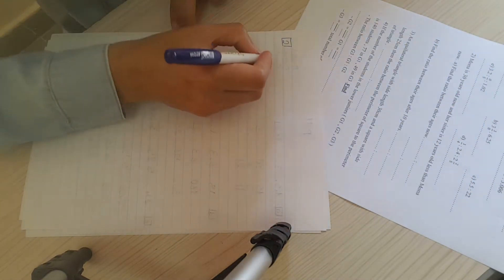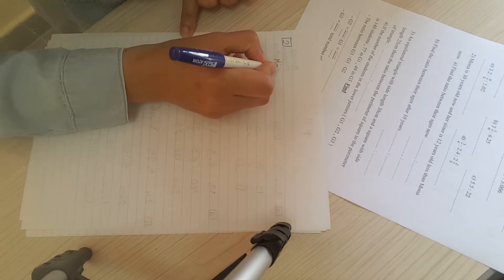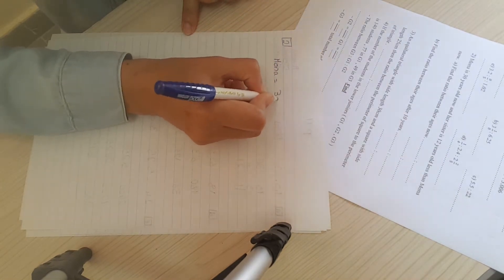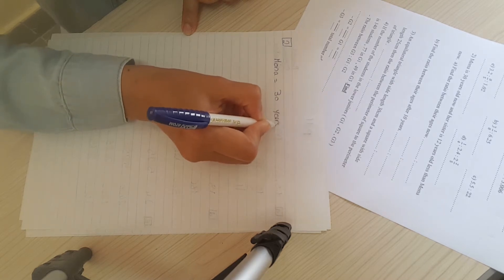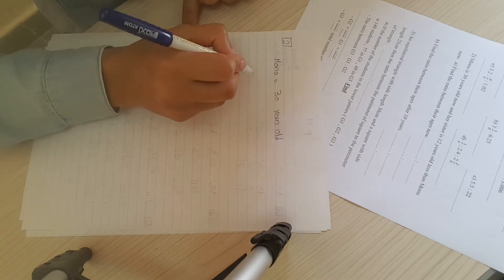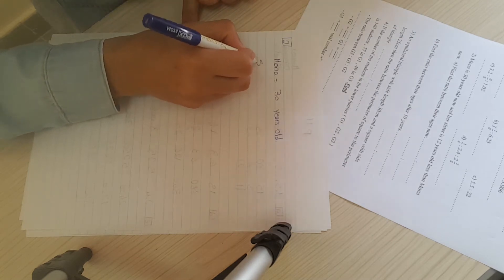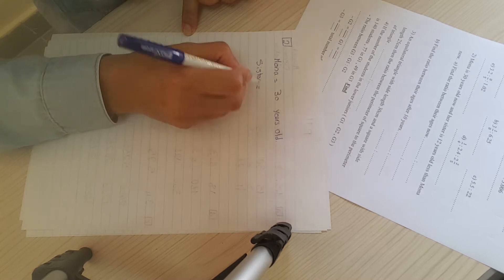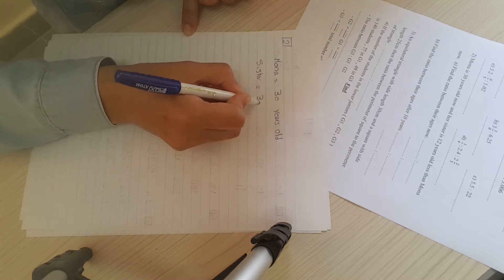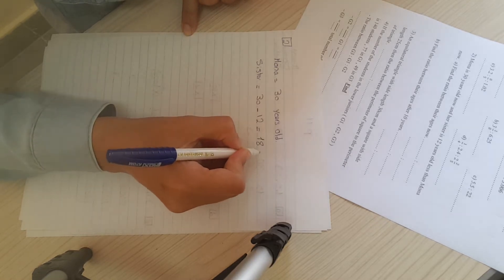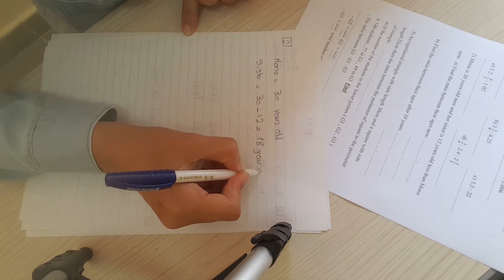First of all, we have to write the important information. Mona is 30 years old. Her sister is less than her by 12, so if Mona is 30, her sister will be 30 minus 12, which is 18 years old.